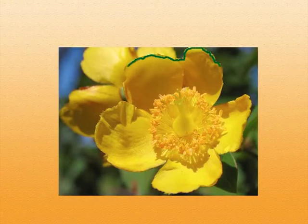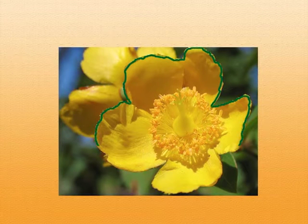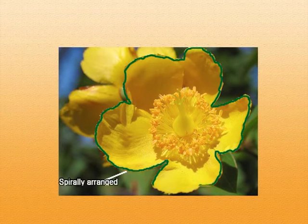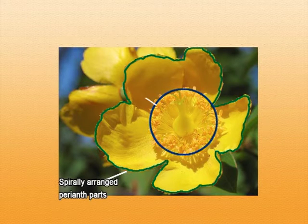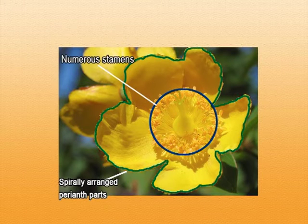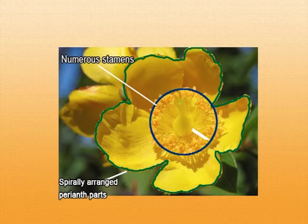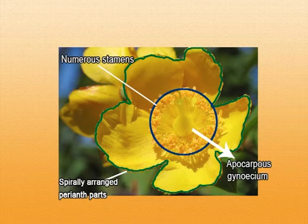The family Ranunculaceae is distinct in having the following characters, mostly in its flower. First, it has spirally arranged perianth parts — that is, sepals and petals are spirally arranged. Second, a distinct character is that it has numerous stamens. Third, it has an apocarpous gynoecium.